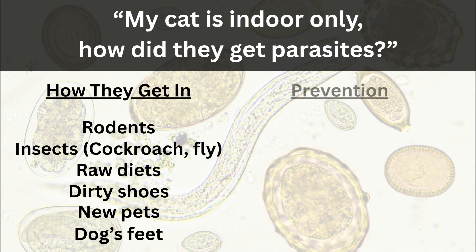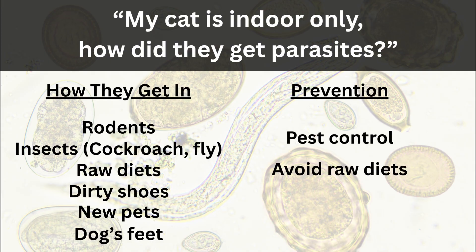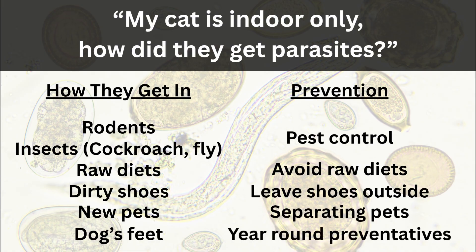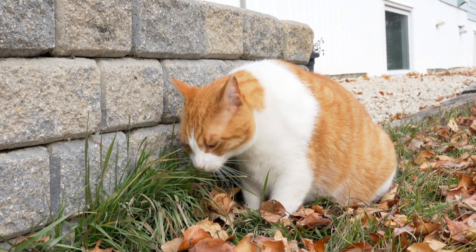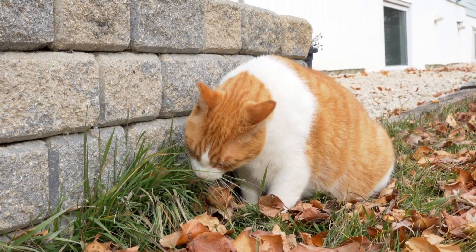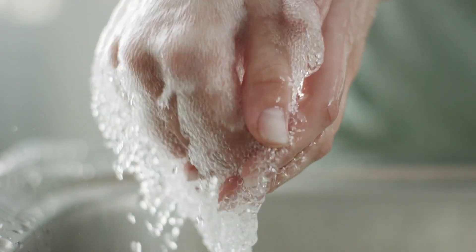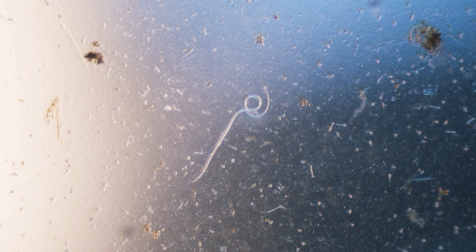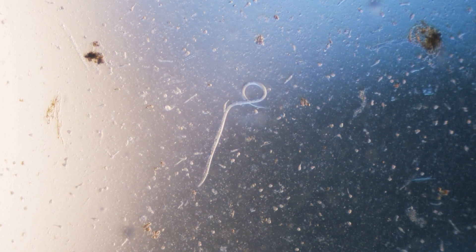Things you can do to help prevent these parasites from entering the home include: pest control if rodents or insects are known to enter the home, avoiding raw or undercooked diets, leaving your shoes outside before entering the house especially after gardening or visiting a dog park, separating new furry additions in the home until they are clear of parasites, and keeping dogs on a regular parasite and deworming schedule. Additional preventative measures include keeping cats inside, washing your hands with soap and water especially after gardening and cleaning the litter box, checking your cat's stool one to two times a year, and regular deworming — especially in kittens and cats that spend time outside.